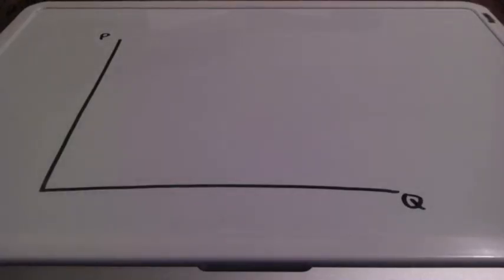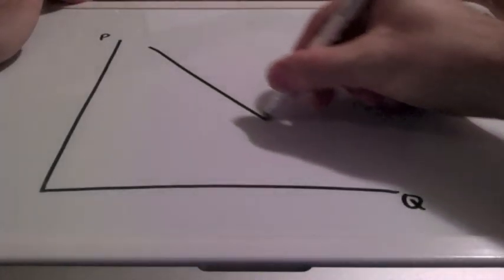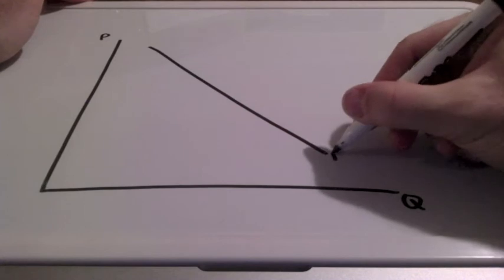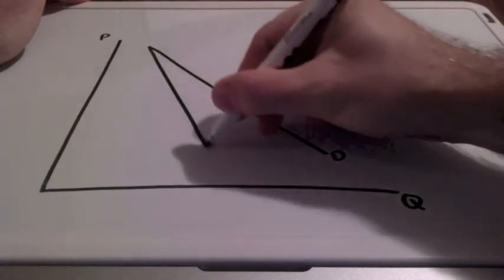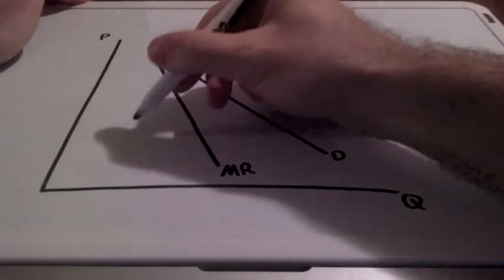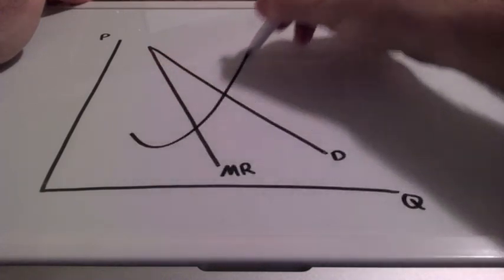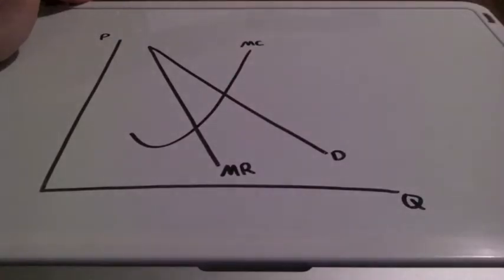Let's go step by step on how to correctly draw and label long run monopolistic competition. Well, first we need to draw our downward sloping demand curve. And beneath the demand curve, we have marginal revenue. We have our upward sloping marginal cost curve. And we've previously just discussed that the average total cost is tangent to the demand curve.